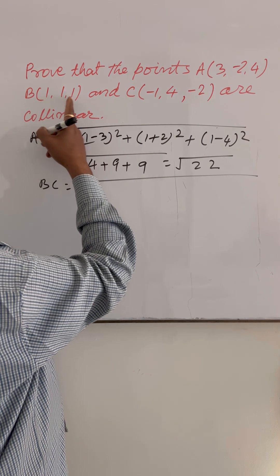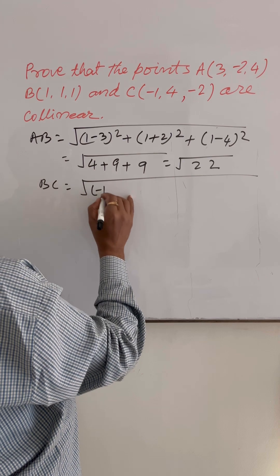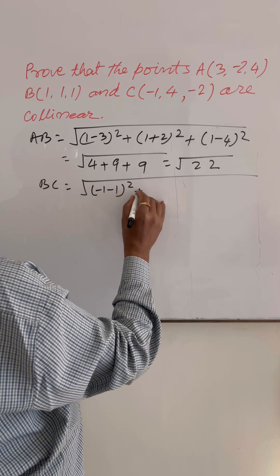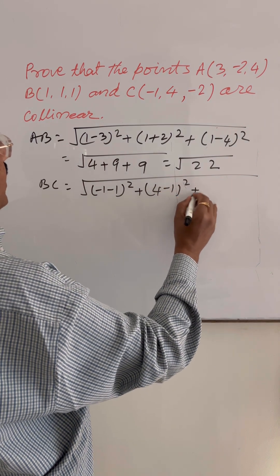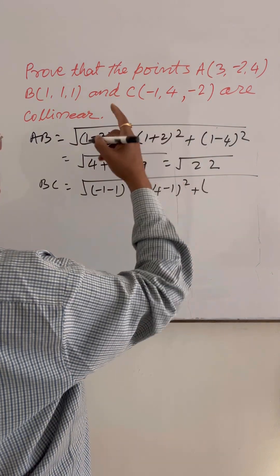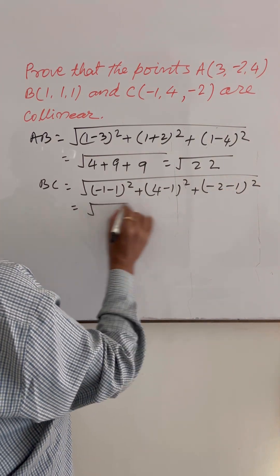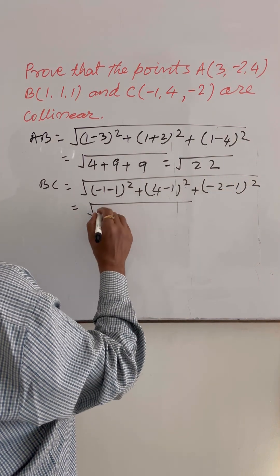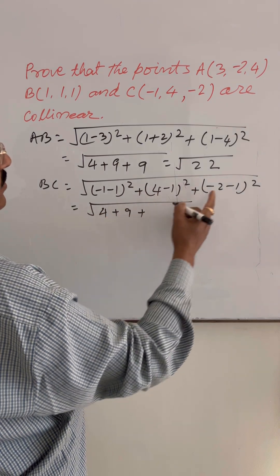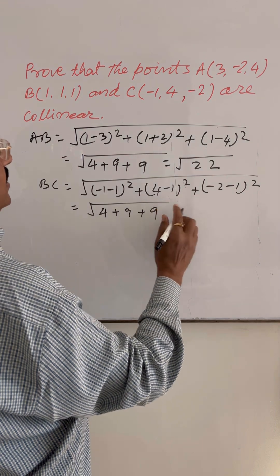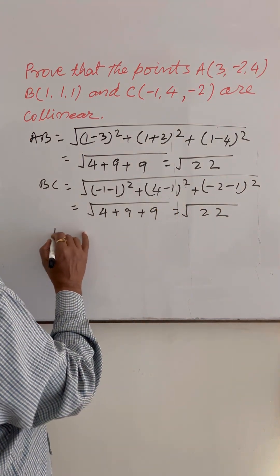Now let us find BC. Taking x1, y1, z1 and x2, y2, z2 for points B and C: BC = √[(−1−1)² + (4−1)² + (−2−1)²] = √[(−2)² + (3)² + (−3)²] = √[4 + 9 + 9] = √22.